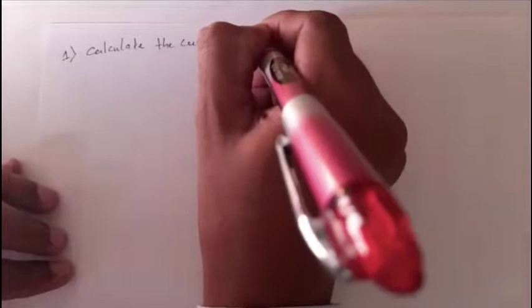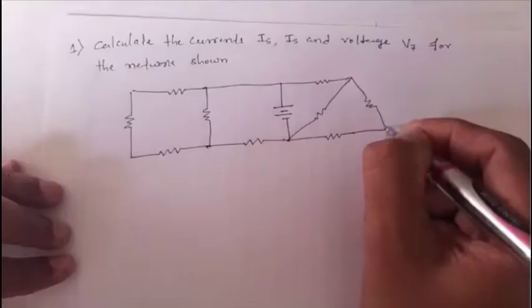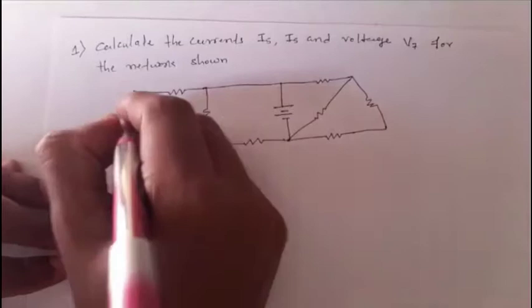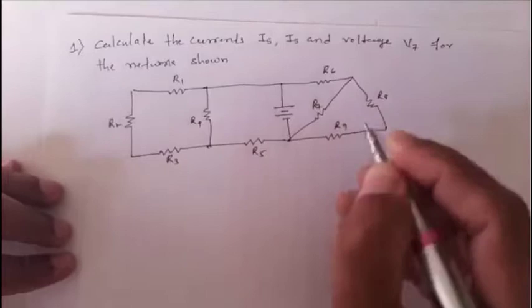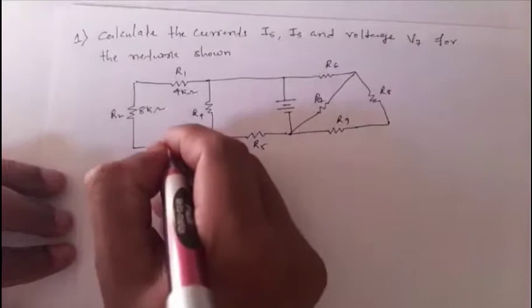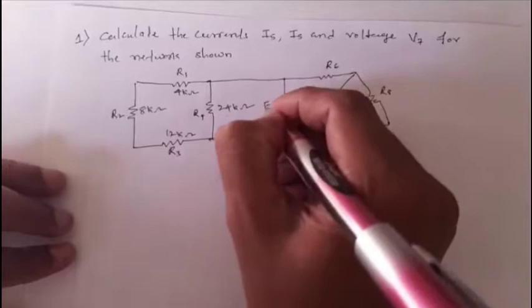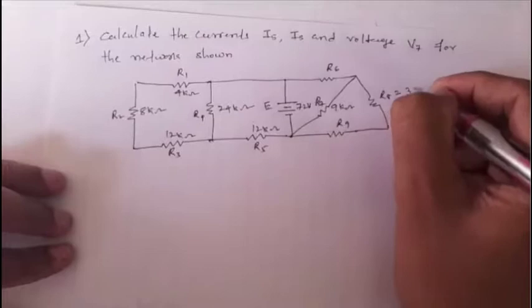Let's discuss the first problem: calculate the current i5 and voltage v7 for the given network. The network contains resistors r1 through r9, with values: r1 = 4 kΩ, r2 = 8 kΩ, r3 = 12 kΩ, r4 = 24 kΩ, r5 = 12 kΩ, voltage source e = 72 V, r8 = 3 kΩ, and r9 = 6 kΩ.